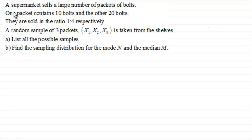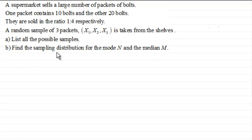A supermarket sells a large number of packets of bolts. One packet contains 10 bolts and the other 20 bolts, and they are sold in the ratio one to four respectively. A random sample of three packets, X1, X2 and X3, is taken from the shelves. In part A we list all possible samples, and in part B we find the sampling distribution for the mode N and the median M.